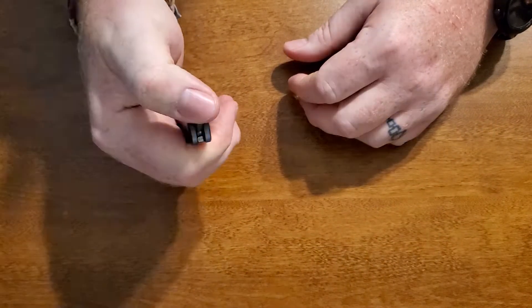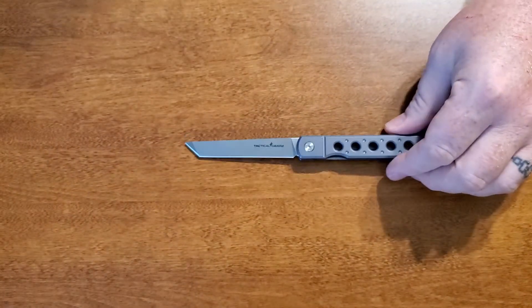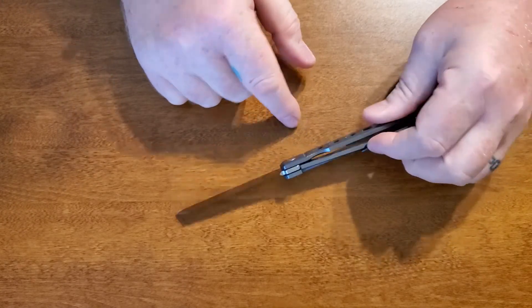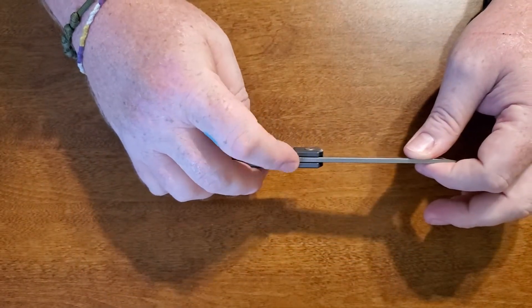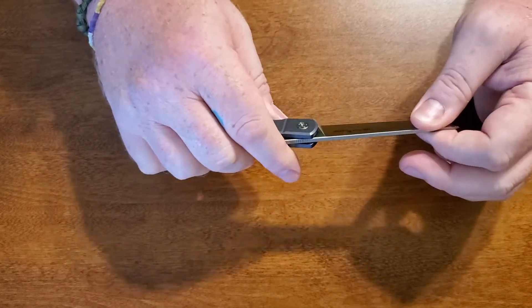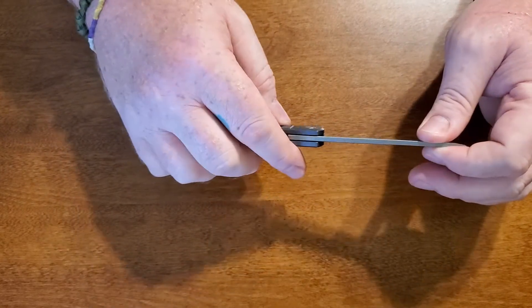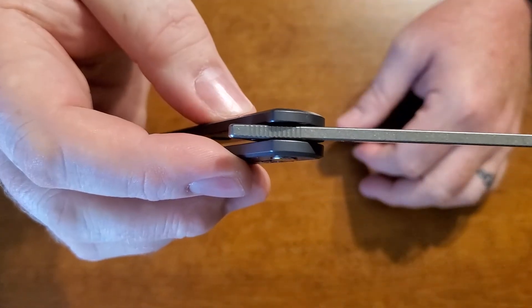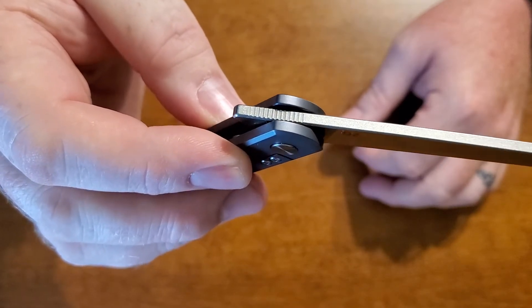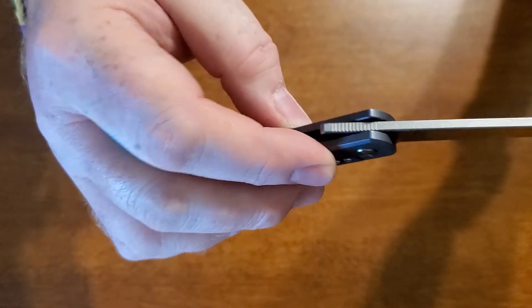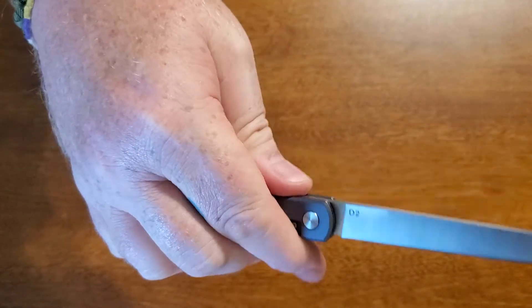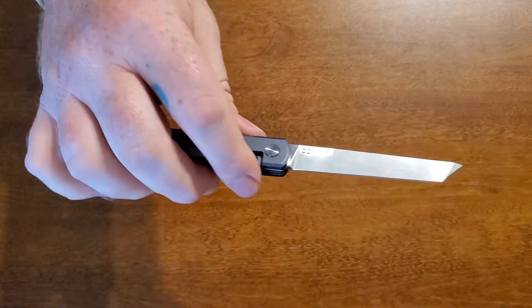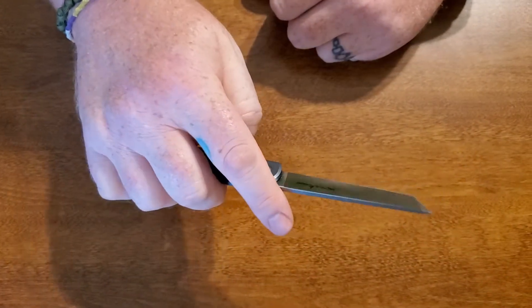So let's see what else is going on with this knife. Got a little jimping here on the spine, but it's just basically non-existent. Let's see, yeah, you can see it. There we go. You know, those indentations you should see, they should just show up a little bit darker when you see them on the video. There's just nothing stopping my thumb. So why even have them?